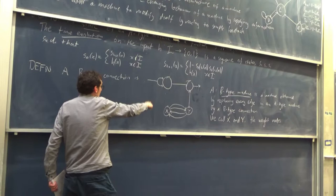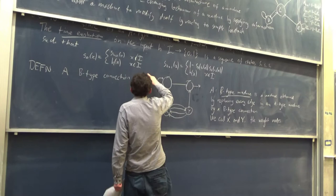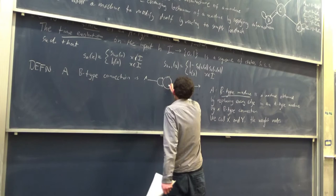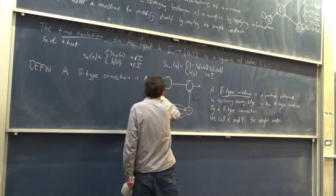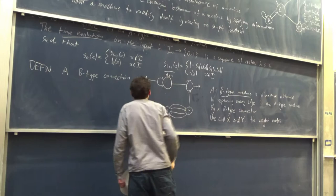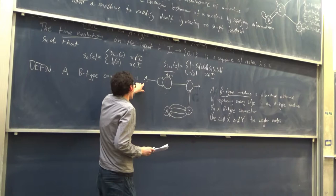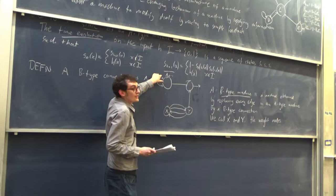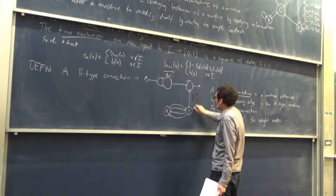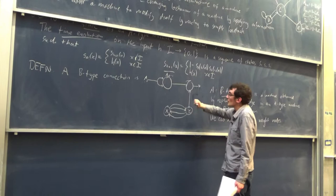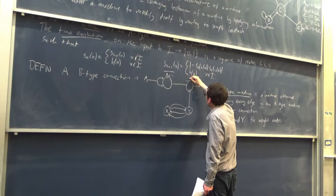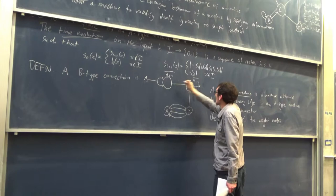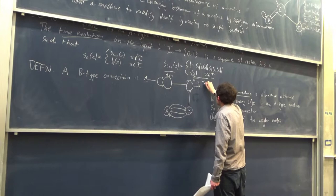Returning to the diagram, we can discuss what the behaviour of a B-type connection is, assuming we know what the states of the weight nodes are. Say the input is some node A. Then the state of the intermediate node at the same time as A(T) will be NOT A(T-1), because it takes the value of A from the previous time step and takes NAND of it with itself — that's just NOT of the previous value. And the value of the output node at the same time will be NOT(NOT(A(T-2))) NANDed with Y at the previous time step.